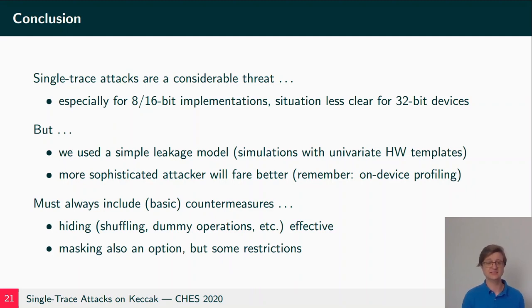So this tells us that we always must include some basic countermeasures. We can't rely on the fact that the attacker only gets a single trace. Countermeasures might include hiding, like shuffling, dummy operations. These tend to be very effective at mitigating all kinds of archetype attacks at relatively low cost. Masking is of course also an option, but comes with some restrictions. For smaller devices, masking alone might not be enough, because you might be able to still get enough information if you combine the two shares using the factor graph.